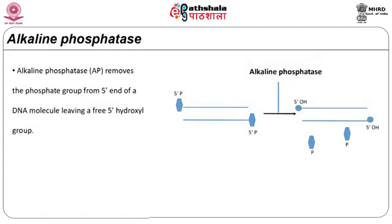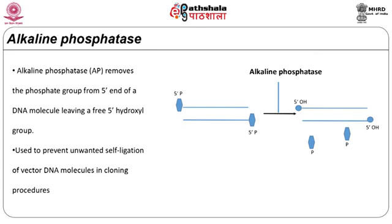The enzyme alkaline phosphatase removes the phosphate group from the 5' end of a DNA molecule, leaving a free 5' hydroxyl group at that position on the nucleotide. It is used to prevent unwanted self-ligation of vector DNA molecules in cloning procedures. These enzymes are most active at alkaline pH, hence the name. Alkaline phosphatase enzyme is isolated from bacteria or calf intestine. The bacterial alkaline phosphatase is more active, but it is often difficult to inactivate at the end of the dephosphorylation reaction. The calf alkaline phosphatase, on the other hand, can be inactivated by adding a protease or by heating the reaction mixture.